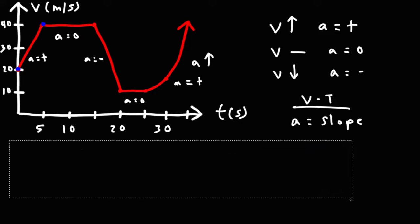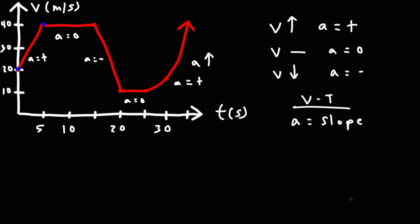We already know what the acceleration is during the next 10 seconds — it's going to be 0 because the velocity is not changing. If you plug in v-final minus v-initial, it's 40 minus 40, which gives you 0.